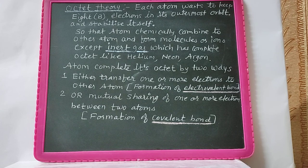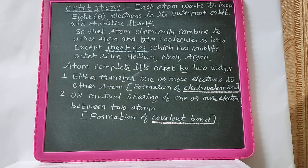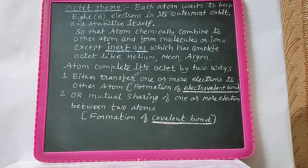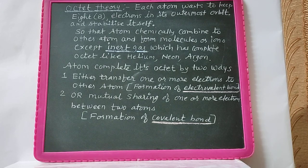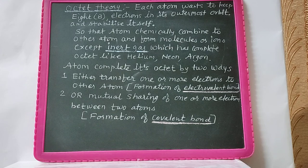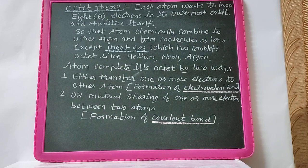Each atom stabilizes itself by chemically combining with other atoms to form molecules or ions, except inert gases which have a complete octet, like helium, neon, and argon. An atom completes its octet by two ways: either by transferring one or more electrons to another atom, which is called an electrovalent bond, or by mutual sharing of one or more electrons between two atoms, which is called a covalent bond.